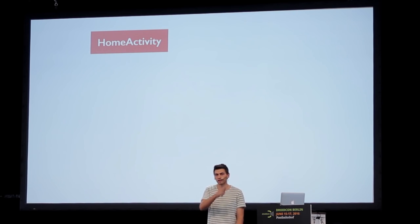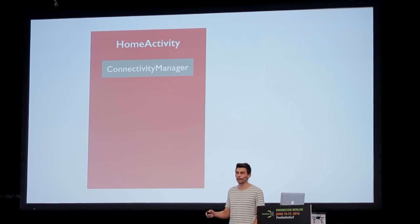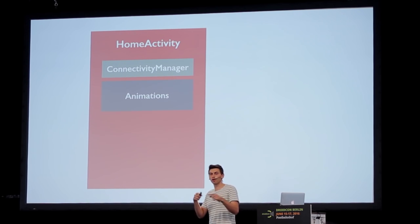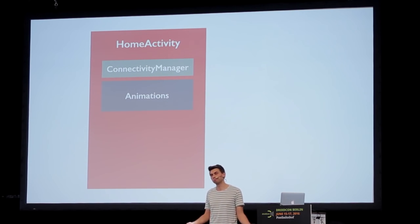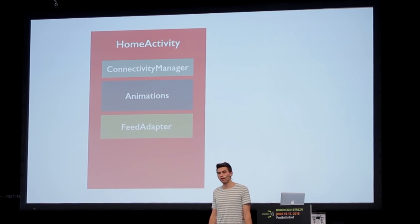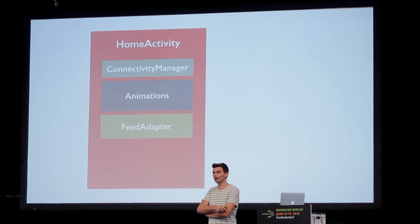Let's take a closer look at the architecture. The HomeActivity contains a ConnectivityManager which listens for internet connection and displays the error state. There are also a lot of animations which check for internet connection and whether loading should be displayed. There's the FeedAdapter, the RecyclerView adapter for items, and the FilterAdapter for enabling and disabling sources.